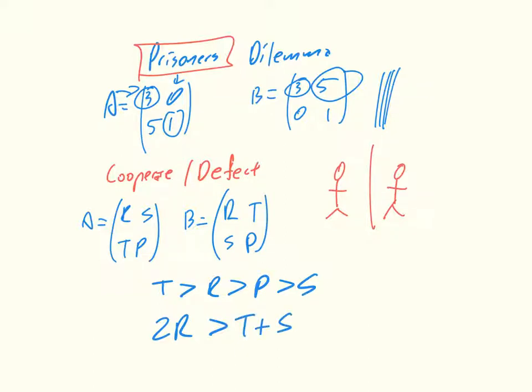Now, all these utility values have names, so this is called the temptation. And so if you think about it, that's the value that you get tempted with. So, for example, if we're both at three, the column player is tempted by a value of five. So that's the temptation.